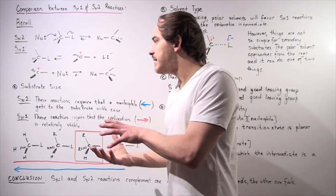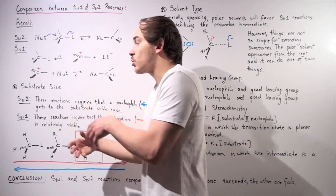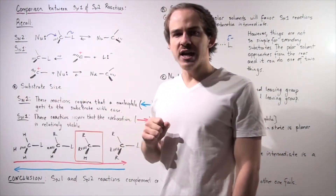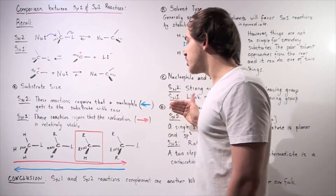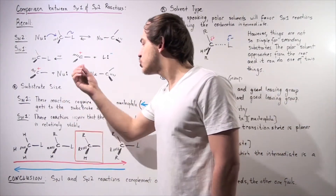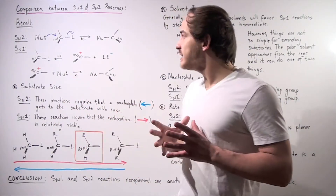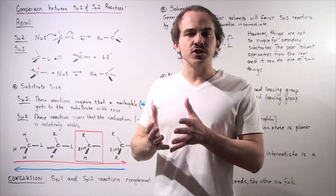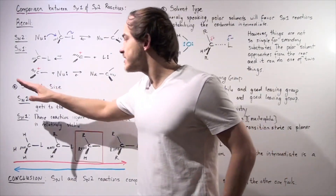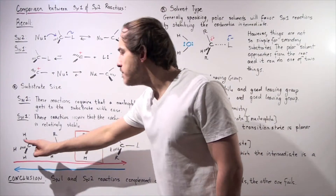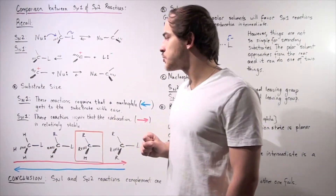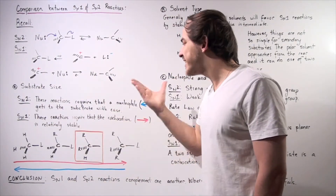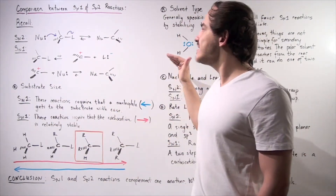Let's describe how the substrate size or structure influences each of these two reactions. In the SN2 reaction, these reactions require that a nucleophile gets to the substrate with ease. The smaller our side groups are, the more likely our SN2 reaction will take place. So our SN2 reaction will be favored for methyl and primary substrates. For the SN1 reaction, these reactions require that the carbocation intermediate is stabilized.